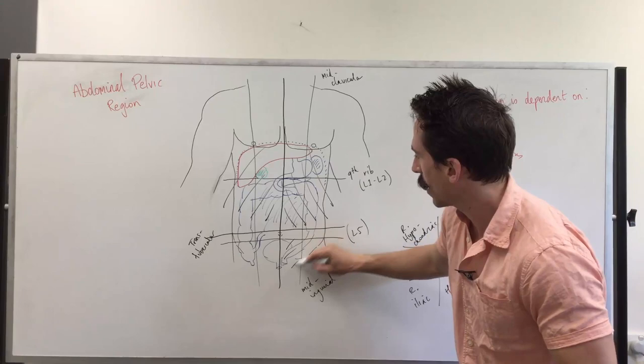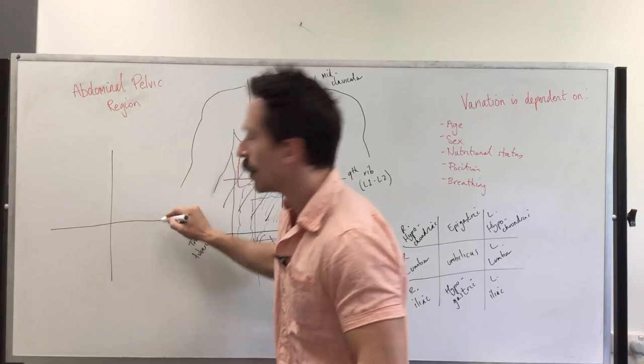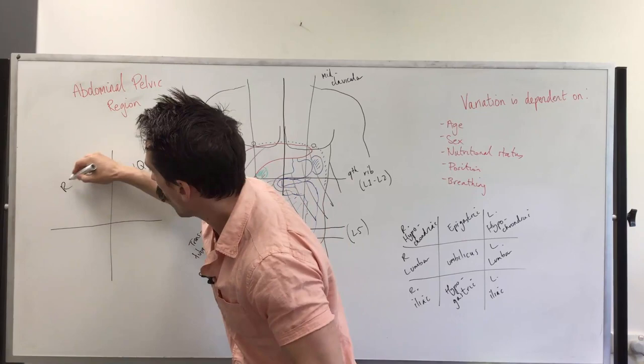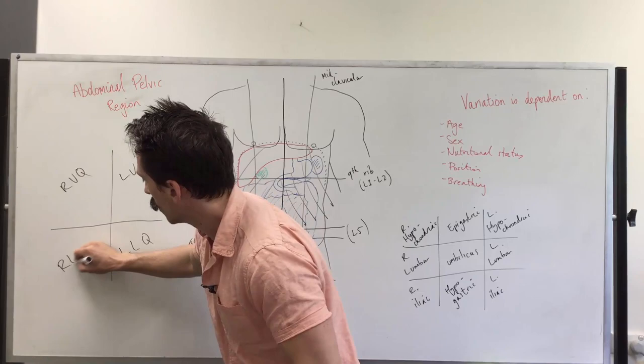And now what you can see is we've separated out into four quadrants. Now these four quadrants, you can name the left upper quadrant, right upper quadrant, left lower quadrant, and right lower quadrant.